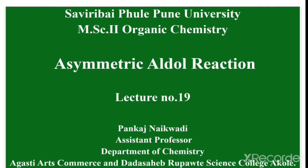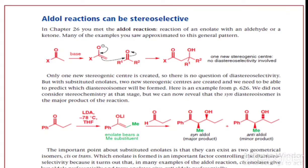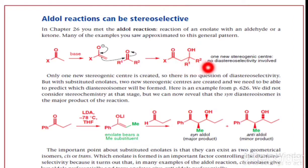In today's lecture we will start the remaining part of asymmetric synthesis — that is, the asymmetric aldol reaction. The aldol reaction can be stereoselective. Here the reaction takes place between an enolate and an aldehyde or ketone. The base abstracts the more acidic proton to give the enolate ion, which then reacts with the ketone to give the beta-hydroxy ketone, where only one new stereogenic center is created, so there is no question of diastereoselectivity.